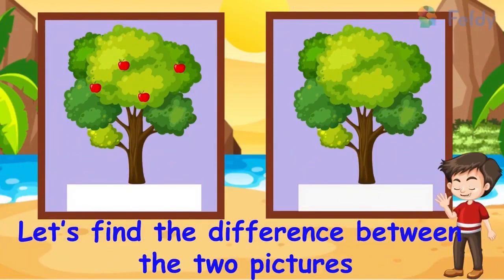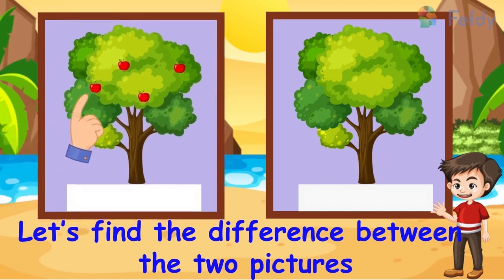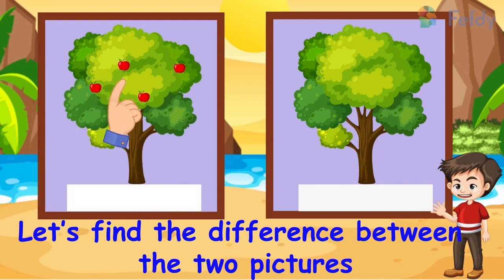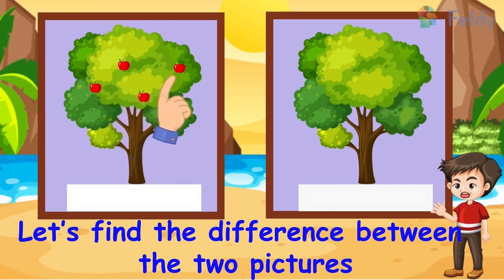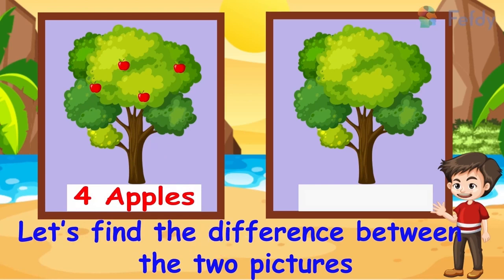Let's find the difference between the two pictures. Come on, let's count the number of apples on the tree. One, two, three, four. Four apples. There are four apples on the tree.